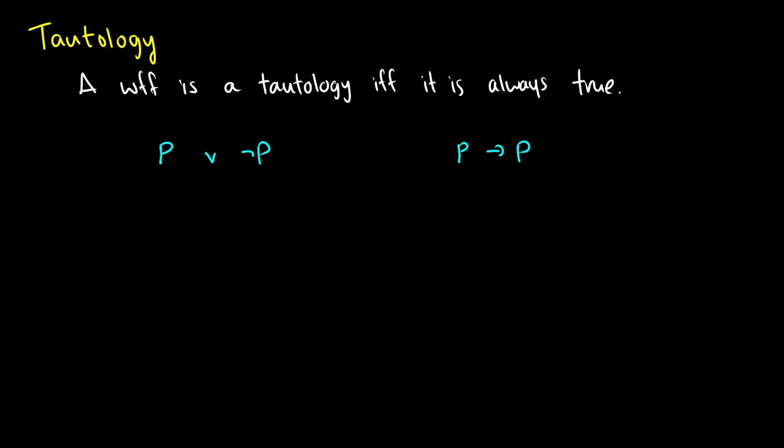We say that a well-formed formula is a tautology if it is always true. That means that no matter what row in the truth table we look at, the output for the final WFF — the complex WFF — will be true.